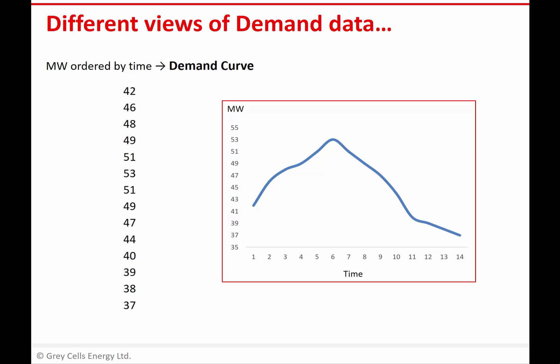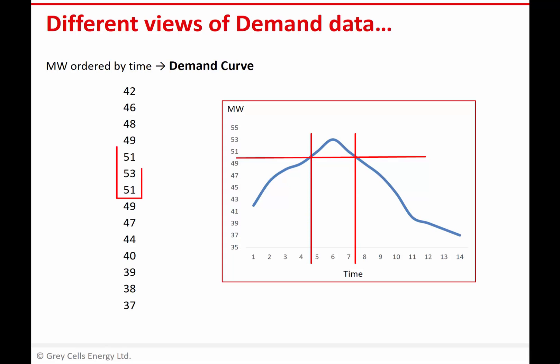From a simple example like that, it would be very easy to see the amount of time for which power demand was above, say, 50 megawatts. I could make an estimate by reading off the chart, and equally I could just look through the data and pick out the periods — let's say these are hourly periods — in which the power demand was above 50, and so there are three periods in this example.